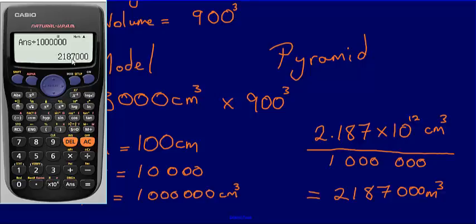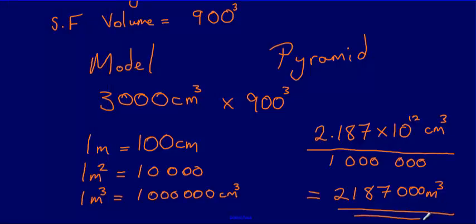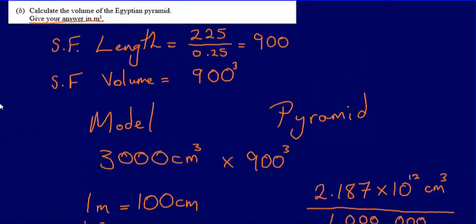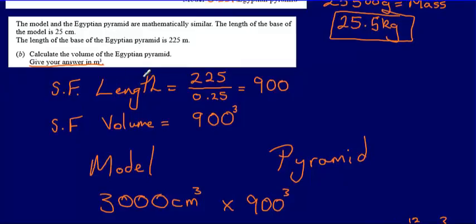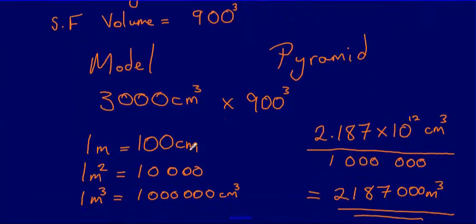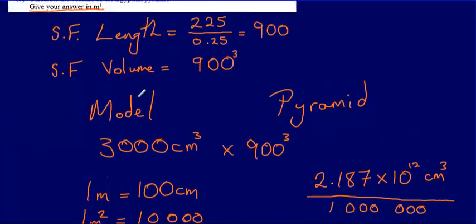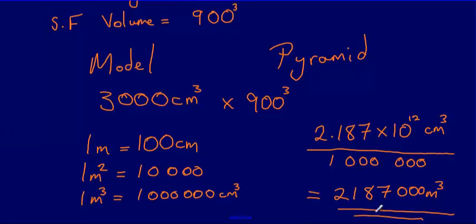Our final answer is 2,187,000 metres cubed. The key things to be careful about here are recognising the different units and conversions between metres, metres squared and metres cubed, and understanding how that affects the relationship between the scale factor for length and the scale factor for volume.